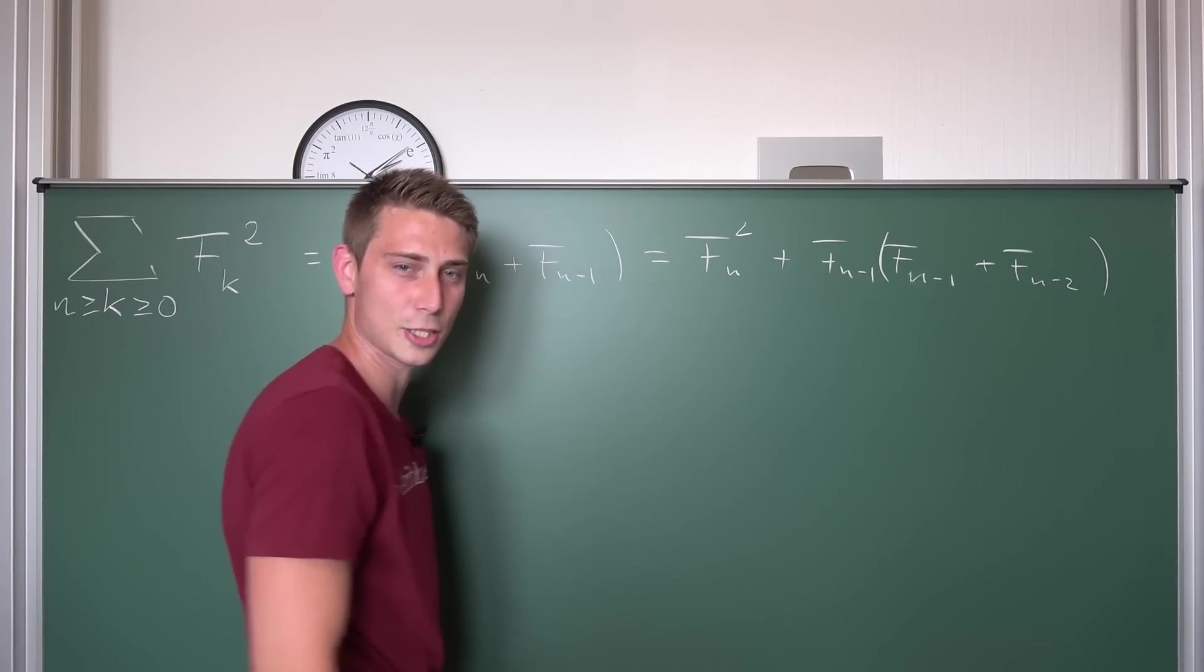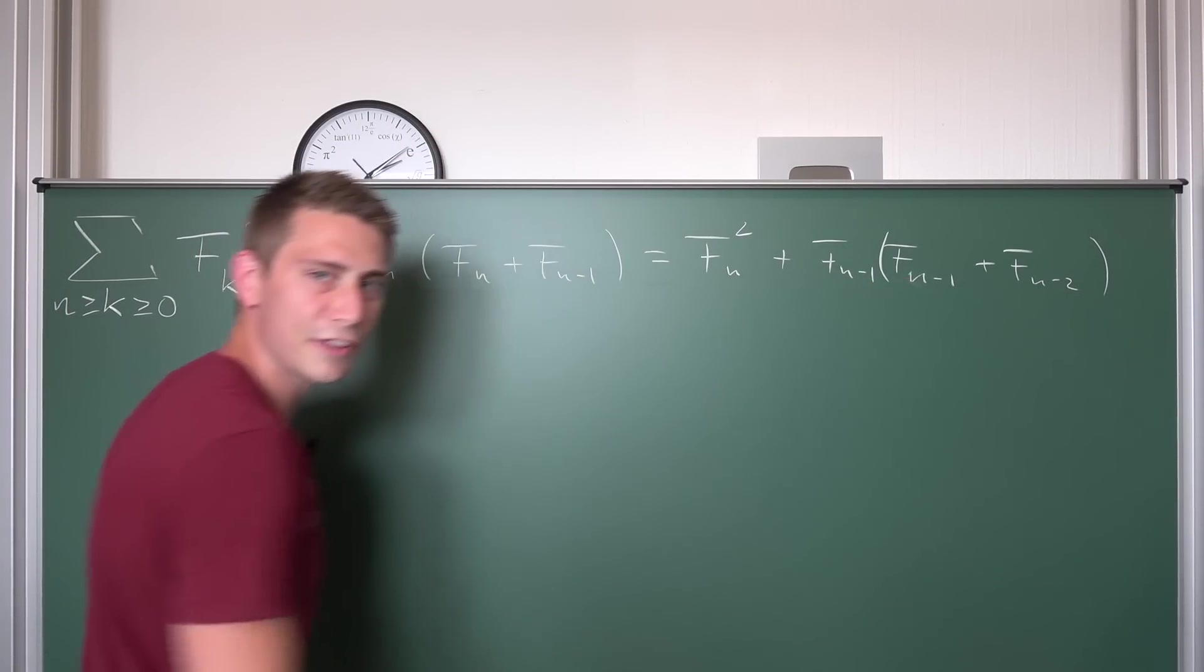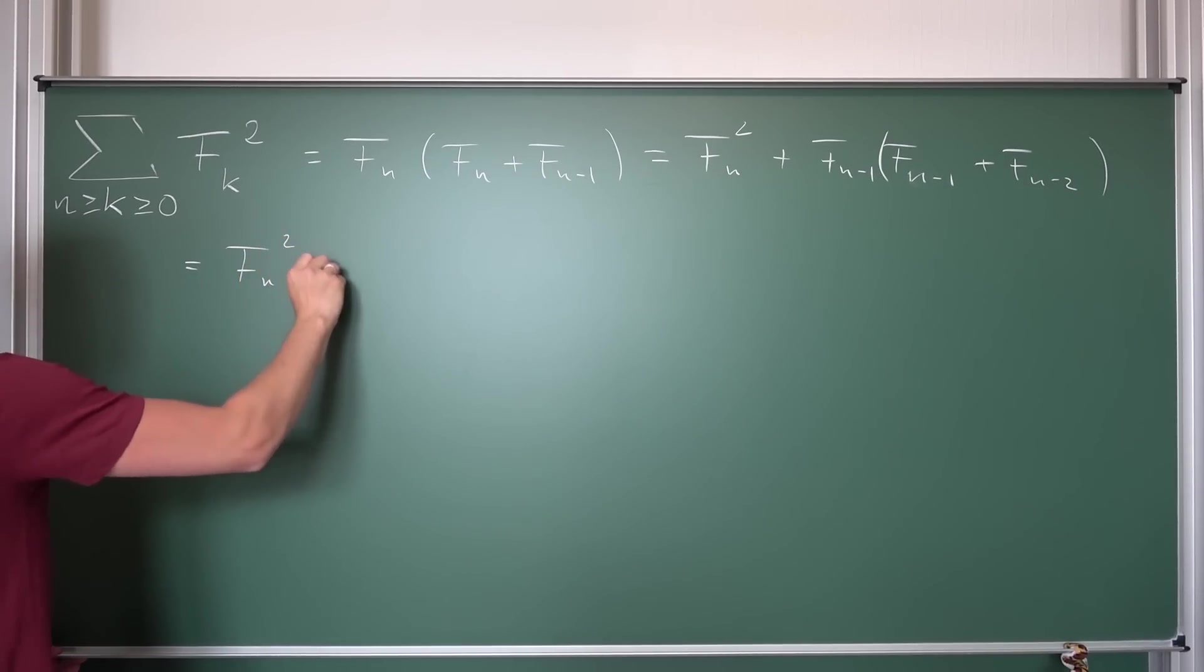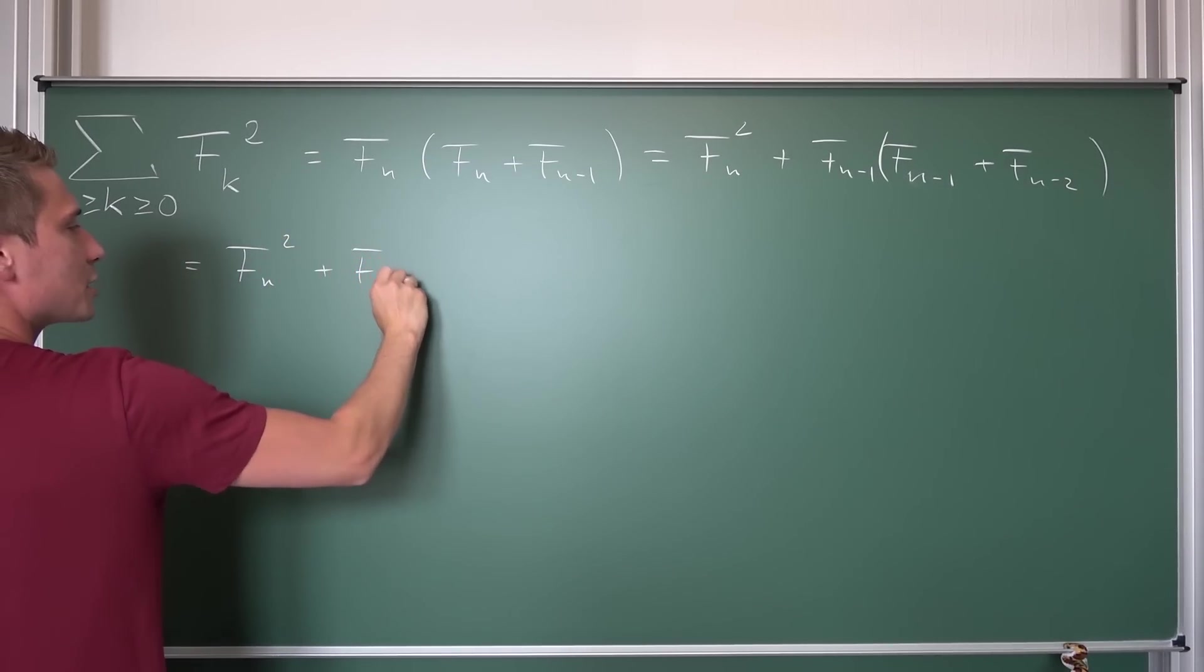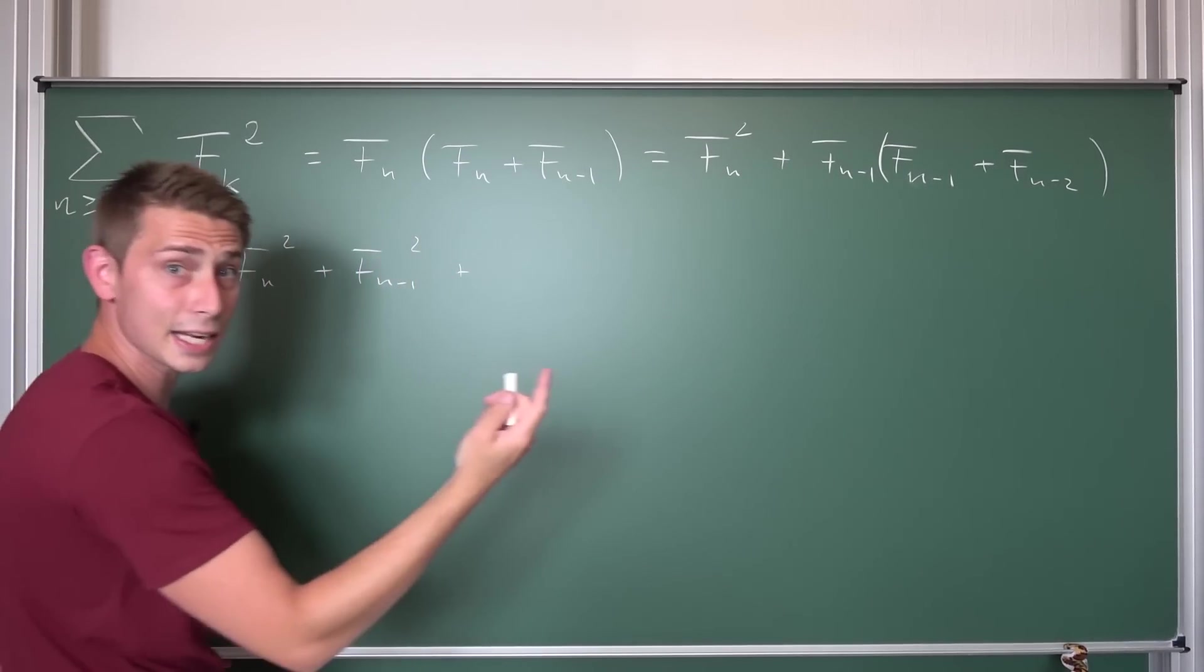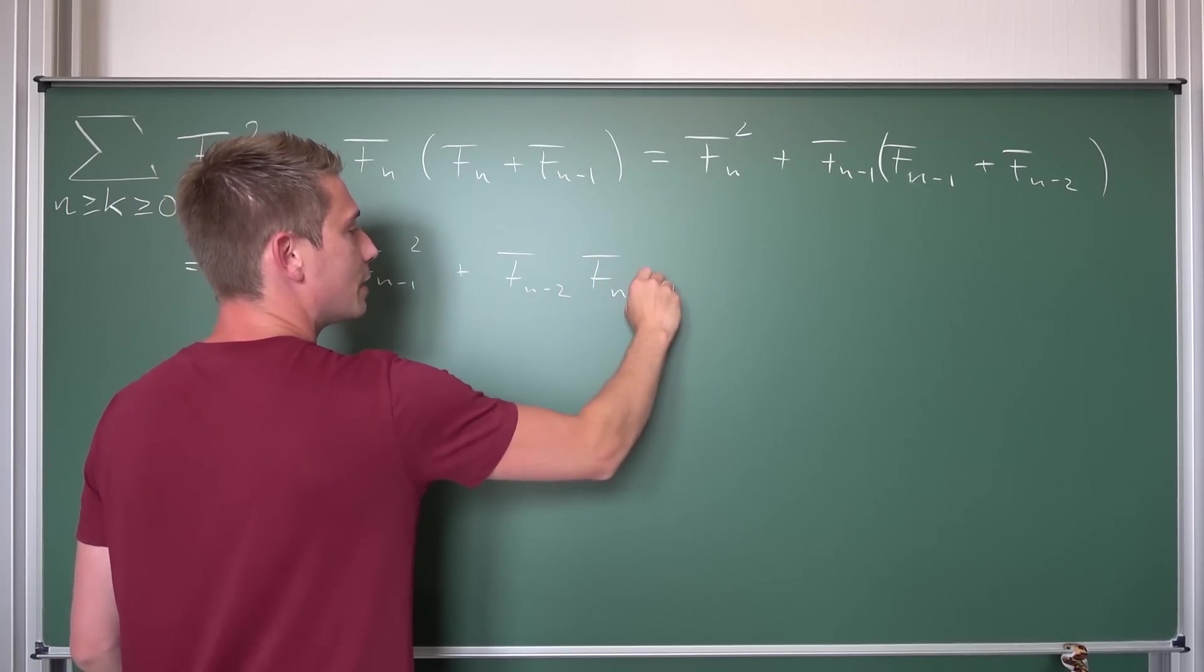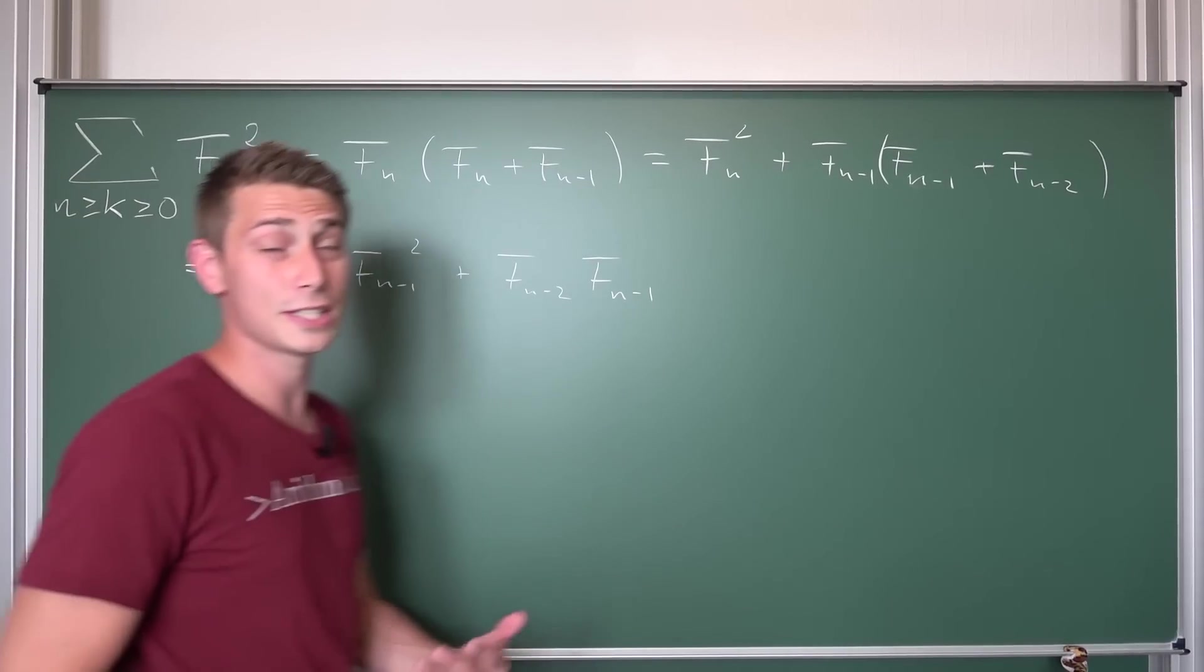And you might notice something. It's pretty good. F_{n-1} and F_{n-1} is going to be squared right now. So this is going to give us F_n squared plus F_{n-1} squared plus, and now we are going to get F_{n-2} times F_{n-1}. And the pattern continues.